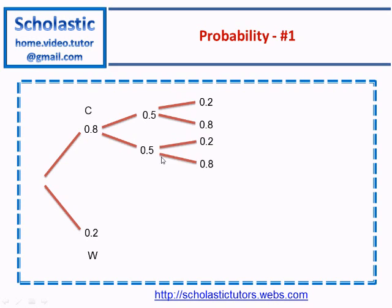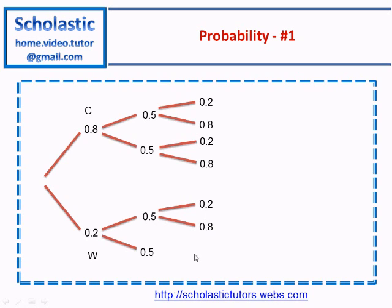Similarly, we can fill up the rest of the tree diagram — after correct, wrong, correct, wrong — and fill in the second part. The first attempt wrong and second attempt correct, second question correct, second question wrong; the probability is still the same here. Then again we fill in 0.2, 0.8 and 0.2, 0.8. This completes the tree diagram.